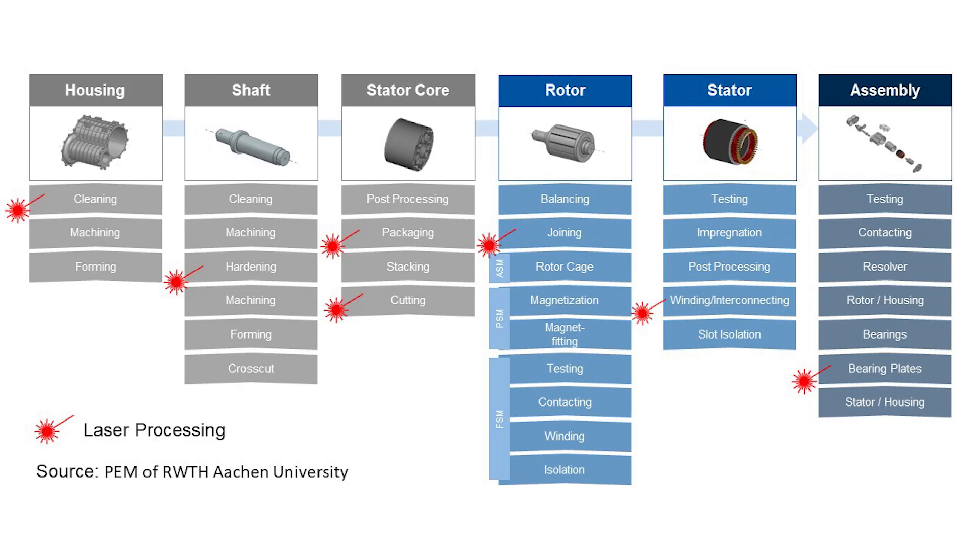In this overview of the eDrive processing chain, highlighted by the laser beam icon, you can get an idea about the opportunities for laser applications for various tasks like cleaning, hardening, cutting, and welding for the steel, copper, and aluminum materials in use.